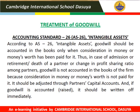Today's topic is Treatment of Goodwill. As per Accounting Standard 26, that is the accounting standard for intangible assets, goodwill should be accounted in the books only when any money or money's worth is paid for it. Thus, in case of admission or retirement or death of a partner or change in profit sharing ratio, goodwill is not accounted in the books of the firm because consideration in money or money's worth is not paid for it. It should be adjusted through partner's capital account, and if goodwill is accounted, i.e. raised, it should be written off immediately.